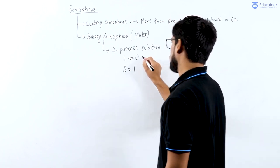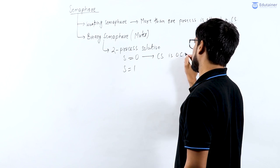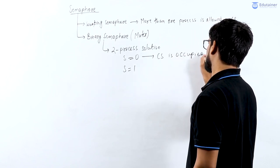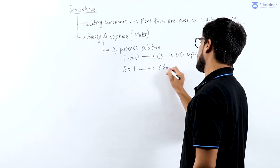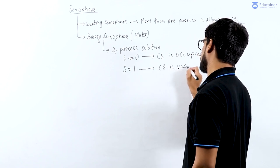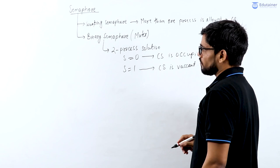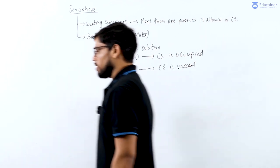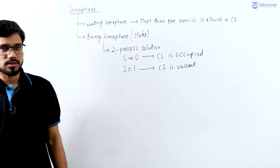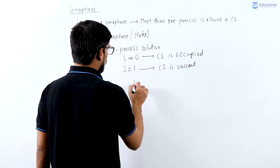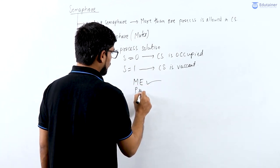If s equals 0, it means the critical section is occupied. If s equals 1, then it means the critical section is vacant. So if only one process can get a chance to enter the critical section, then it will provide mutual exclusion and it will provide progress.